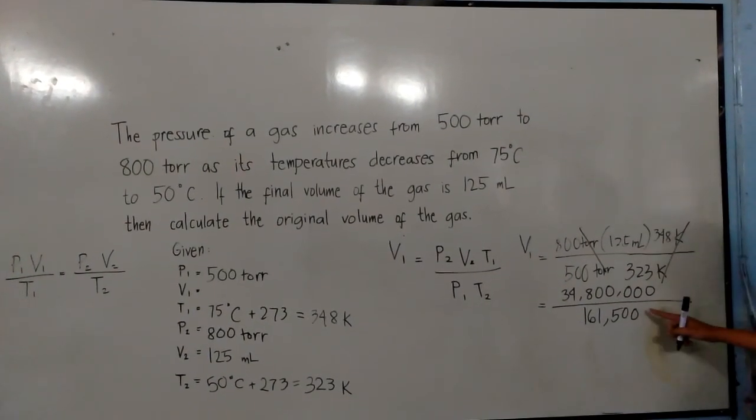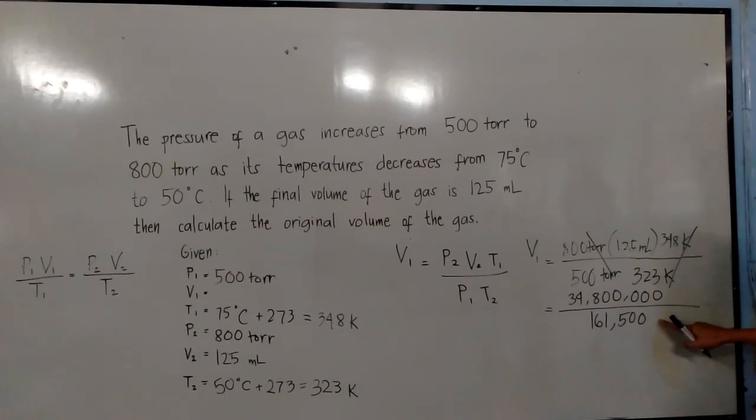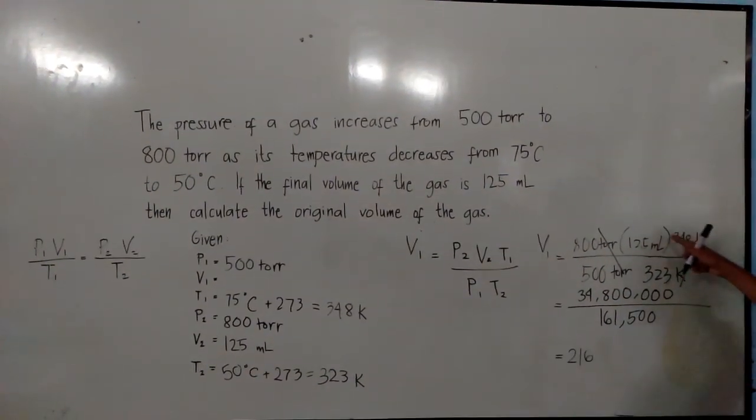We will divide 34,800,000 by 161,500 and copy the unit left.